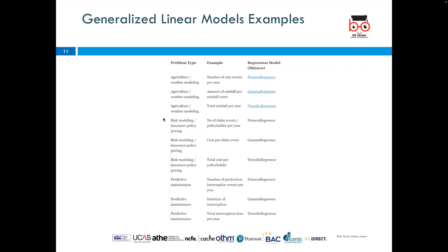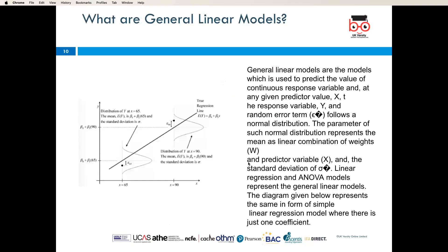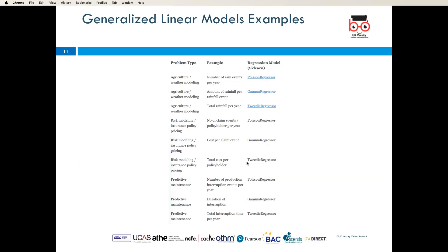These are the generalized linear model examples. We have problem type, example, and regression model in this table. For example, the first one is agriculture weather modeling, number of rain events by year. Obviously, we have to use Poisson regressor for that. And if you should look at another one here, which is risk modeling, insurance policy pricing, total cost per policy, we use gamma regressor. This is a popular example of generalized linear model examples.